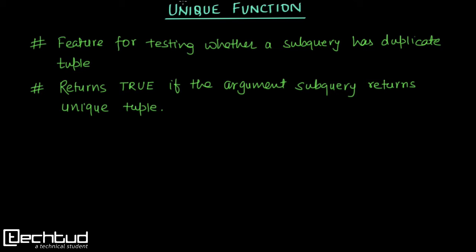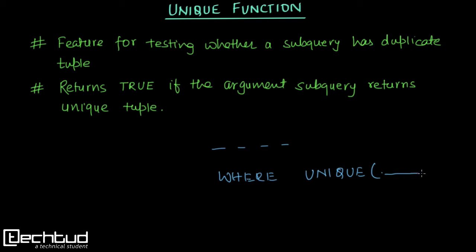Similarly, here we have the UNIQUE function. There will be some outer query, then a WHERE condition, then UNIQUE, and in the argument we will have some inner query. This UNIQUE function will return true only if this inner query has unique tuples. So if this inner query has some duplicate tuple — as we know, in SQL the query can return duplicate tuples because the output is not a set — if it has a duplicate tuple, this UNIQUE function will not return true.